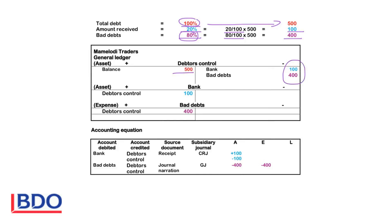We will credit the debtors' control with the amount received and the bad debts so that we can write off this account. Because this person's debt is written off, you will close his account. The bank account is debited with 100 to increase assets on the debit side. Bad debts is debited to increase the expense on the debit side. Debtors is credited to decrease assets with the amount removed from the debtors' account. You will issue a receipt and the source document, and the subsidiary journal will be the cash receipts journal.